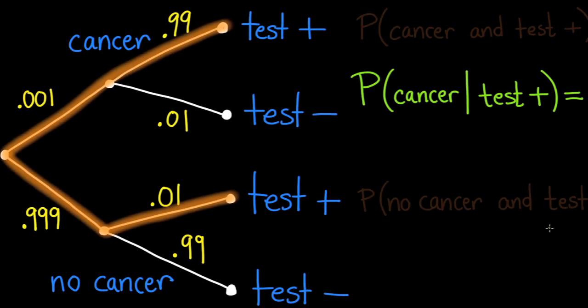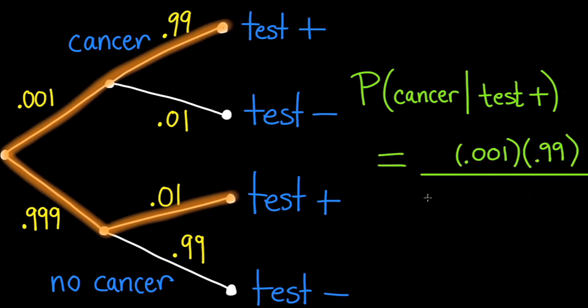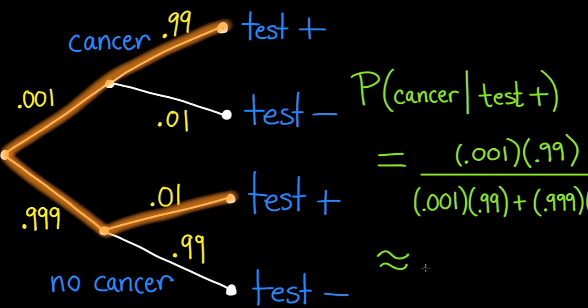The probability that you actually do have the cancer, given that you test positive, works out to about .09 — less than 10%. The error rate of the test is only 1%, but the chance of a misdiagnosis is more than 90%. Chances are pretty good that you do not actually have the cancer, despite the rather accurate test.